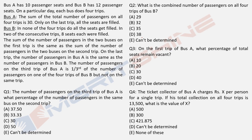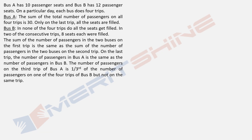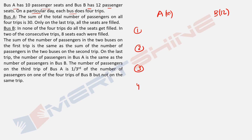What does it say? Bus A has 10 passenger seats. Bus B has 12 passenger seats. On a particular day, each bus does four trips — so that's Trip 1, Trip 2, Trip 3, and Trip 4.